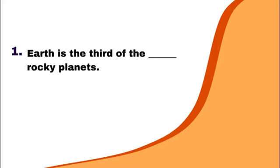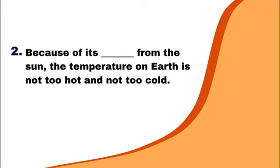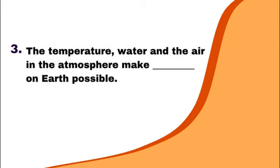Earth is the third of the four rocky planets. Because of its distance from the sun, the temperature on Earth is not too hot and not too cold. The temperature, water, and the air in the atmosphere make life on Earth possible.